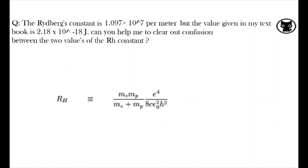Hey guys, so a classmate asked, the Rydberg's constant is 1.097 times 10 to the power of 7 per meter, but the value given in my textbook is 2.18 times 10 to the negative 18 joules. Can you help me to clear out confusion between the two values of the RH constant?